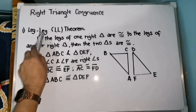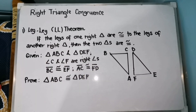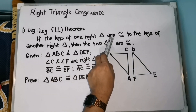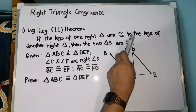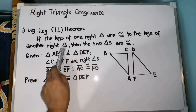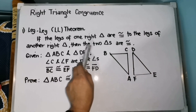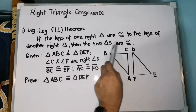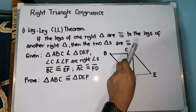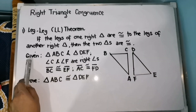Let's start with the first one: the Leg-Leg or LL theorem. It states that if the legs of one right triangle are congruent to the legs of another right triangle, then the two triangles are congruent.